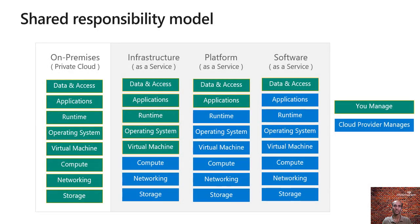Now let us take a look at different types of cloud services. Here is a shared responsibility model, which describes the control that you as an organization have and what resources you can manage, and what resources the cloud provider can manage. The boxes in green will be managed by you as an organization, whereas boxes in blue will be managed by the cloud provider and the cloud provider will be fully responsible for it. On the leftmost side, we see an on-premise data center, which is a private cloud, in which the organization will have to manage the compute, networking, and storage resources — which is the complete IT hardware as well as infrastructure.